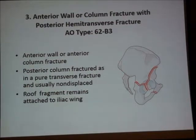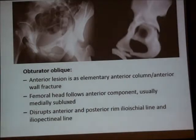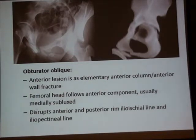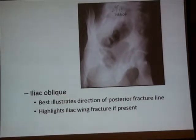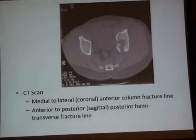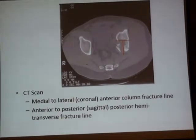There is disruption of the ischio-pubic ramus. You can diagnose it as anterior column injury with a posterior component, with some articular roof still intact with the ilium. On CT scan and the iliac oblique view, you can see the iliac fracture line and the hemitransverse component. The posterior hemitransverse is usually minimally displaced. CT scan shows the anterior component and the posterior hemitransverse fracture line clearly.